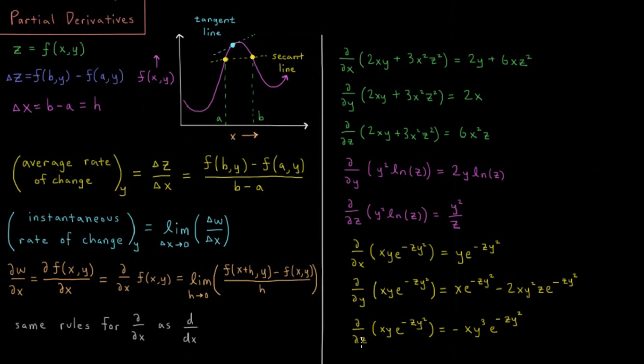And the derivative with respect to z—everything here is constant, and then pulling out the chain rule from this exponent, we get negative y squared that gets pulled down, multiplying by xy, giving us negative xy cubed e to the minus zy squared.